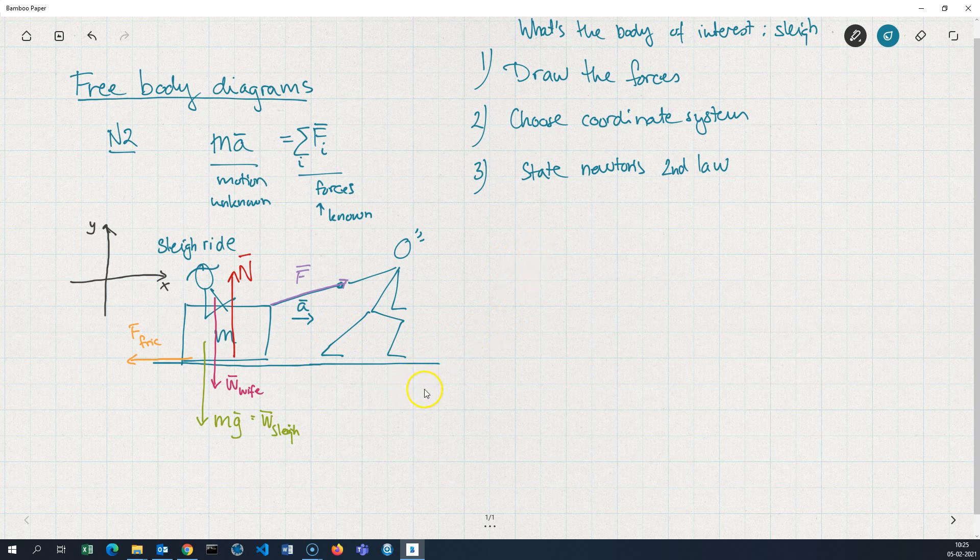So, the second law is now M A equals the weight of the sleigh, that's the gravity acting on the sleigh, and then we have the weight of my wife. And notice I've put plus signs all the way. That's because it's a sum that we're doing here. It's a sum of vectors. And then we have the normal force, and the friction force, and finally, my pulling force.